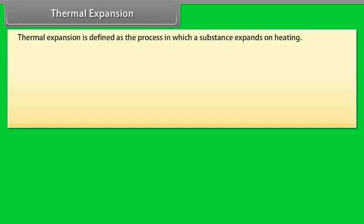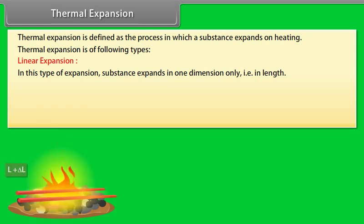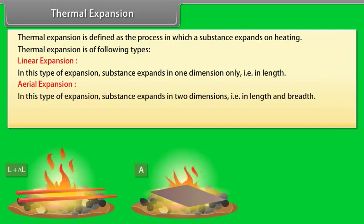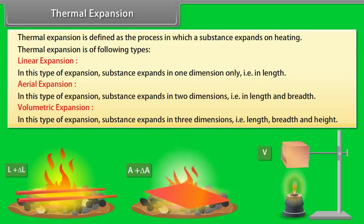Thermal expansion is defined as the process in which a substance expands on heating. Thermal expansion is of three types: (1) Linear expansion, in which the substance expands in one dimension only, that is, in length. (2) Aerial expansion, in which the substance expands in two dimensions, that is, in length and breadth. (3) Volumetric expansion, in which the substance expands in three dimensions, that is, in length, breadth, and height.